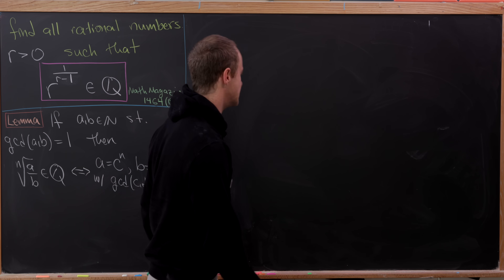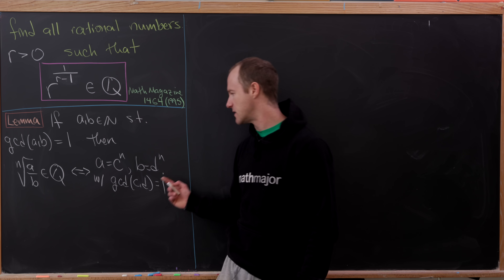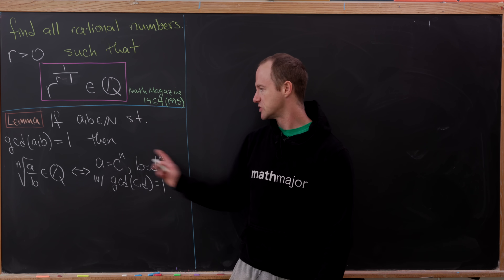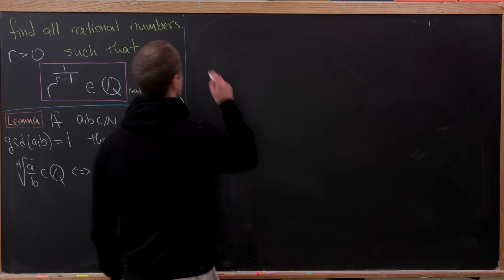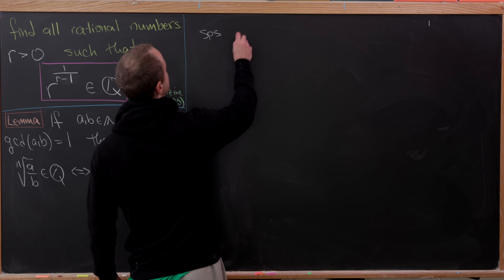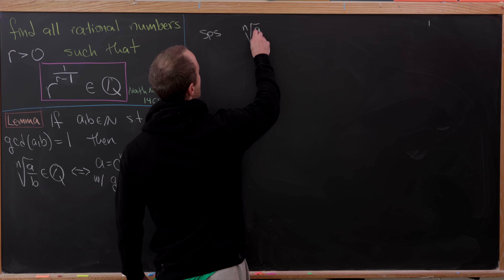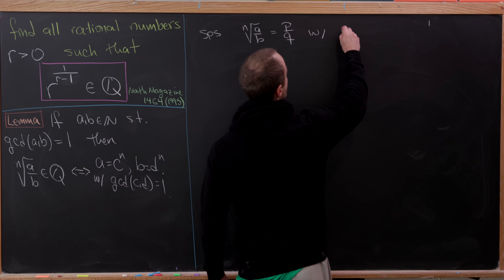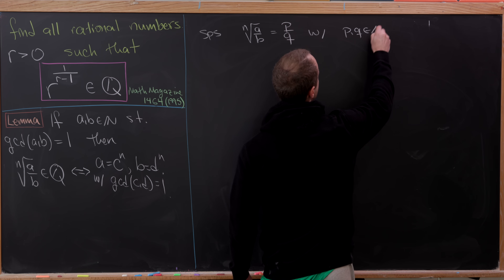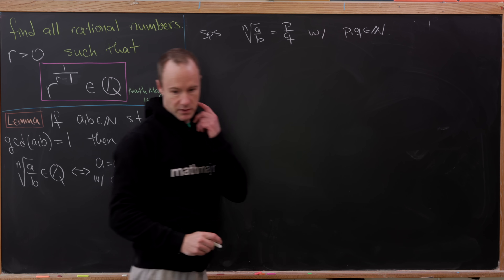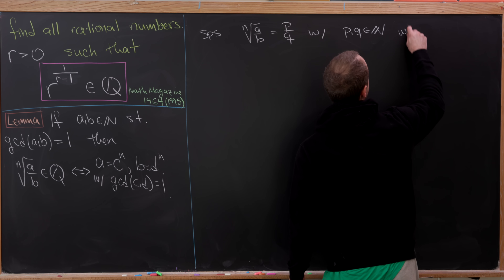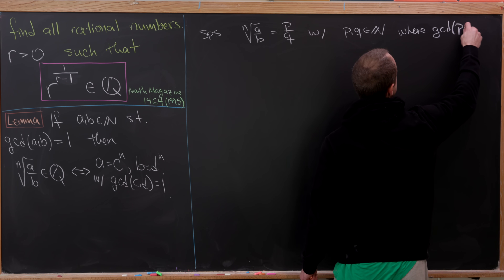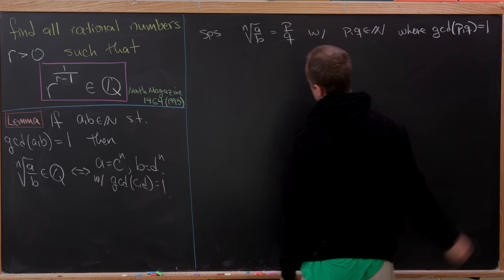This is an if and only if statement, but the reverse direction is pretty obvious, so we'll just focus on the forward direction. Let's suppose that the nth root of a over b is rational, so we can write it as p over q with p and q both natural numbers where gcd of p and q is 1.